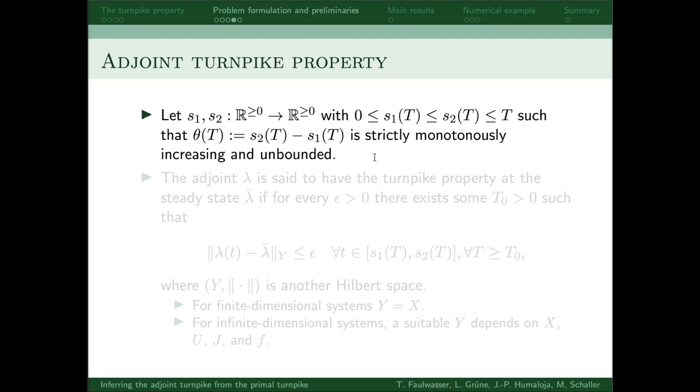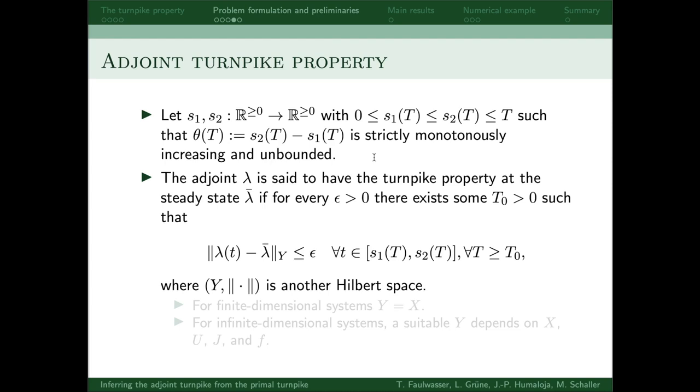Note that these can be different functions from the primal turnpike property. Now, similar to the primal turnpike property, we say that the adjoint has a turnpike property at lambda bar if for every epsilon there exists some T0 such that lambda stays close to lambda bar for all time instances on this time interval.